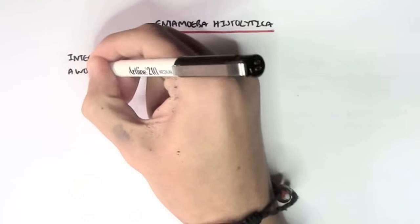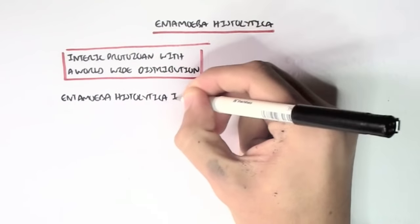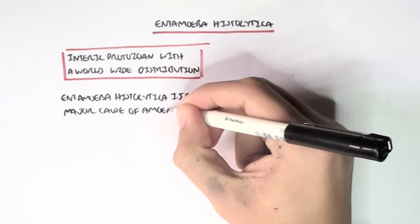The Entamoeba histolytica are enteric protozoans with a worldwide distribution. It is thought to infect as much as 10% of the world's population.